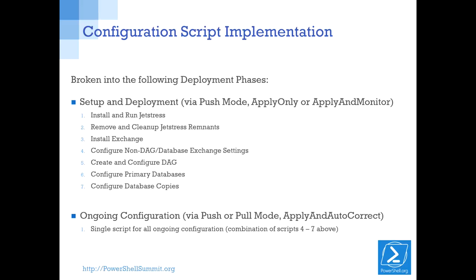Once we're done with the complete setup and deployment of Exchange, we switch over to ongoing configuration mode. Our goal is to initially get to pull mode, but due to competing projects and priorities, we haven't got there yet. So we're still doing our configurations in push mode, but the key is that we're setting the local configuration manager to apply and autocorrect — that's how we can monitor for and prevent configuration drift. That's a single script, basically a combination of scripts four through seven.